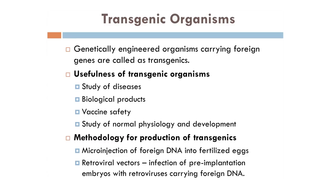Now let us understand how transgenic organisms are being made. A transgenic organism is a genetically engineered organism carrying a foreign gene, and the foreign gene is called the transgene. The usefulness of transgenic organisms: we can use them to study diseases — for example if there is a disease and we want to see how it is affecting the body of a person, we can prepare a transgenic animal and see how the disease is developing, so that effective drugs can be manufactured for it.